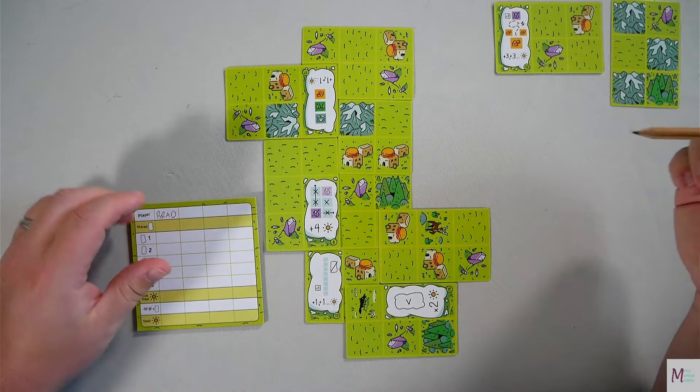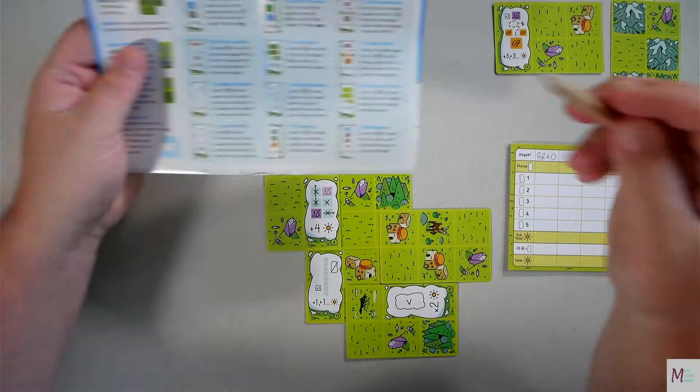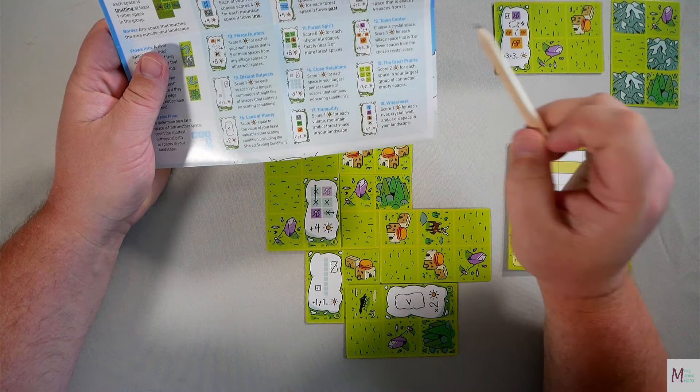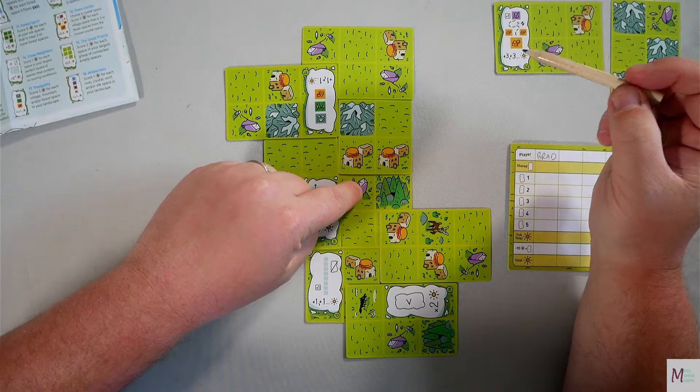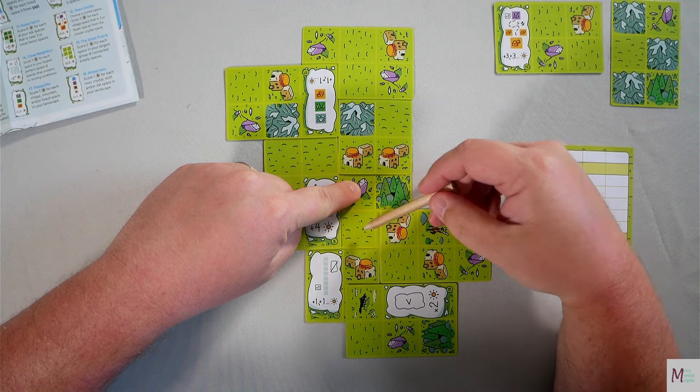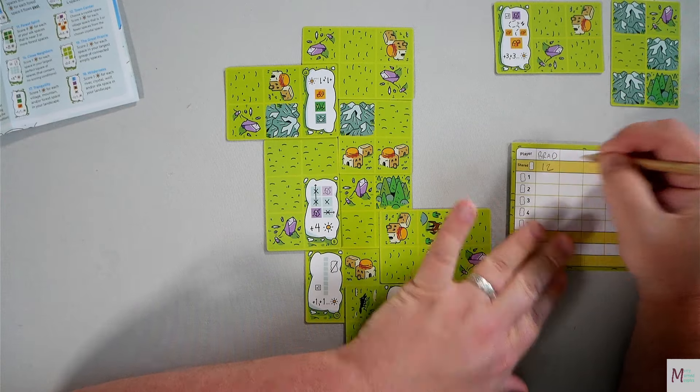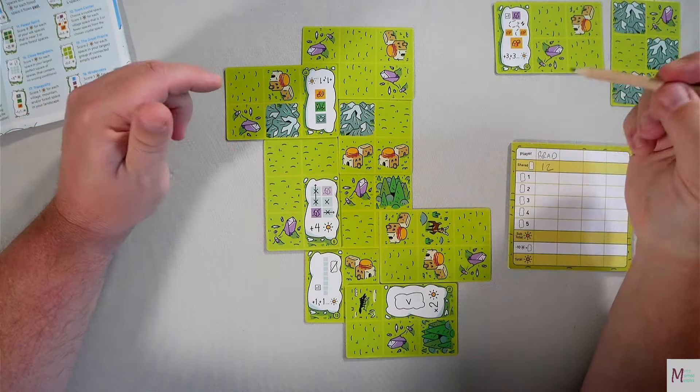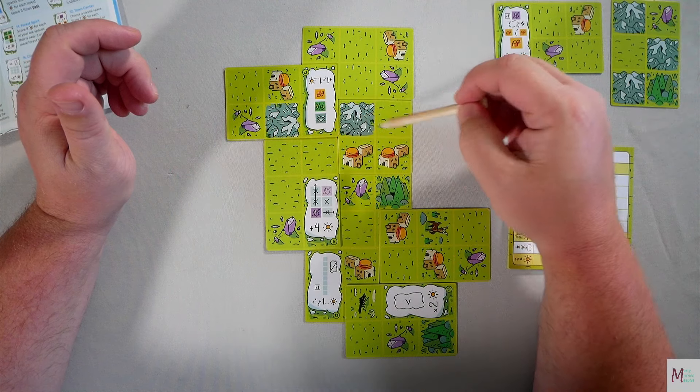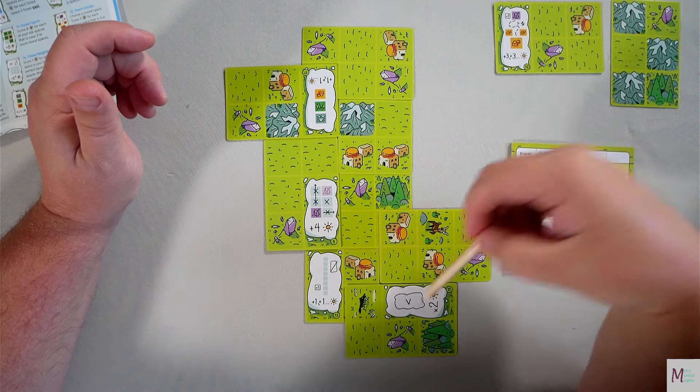Let's go ahead and total up my shared one. So let's refresh our memory. Shared is choose a crystal space, score three for each village space that is three or fewer spaces from the chosen crystal. So we're going to choose this crystal. We have one, two, three, four. So we have four villages, so that's going to be 12 for the shared. Let's work our way top to bottom, left to right. So one point for every village, forest, and mountain. So we have one, two, three, four, five, six, seven, eight, nine, ten, eleven points for that one.